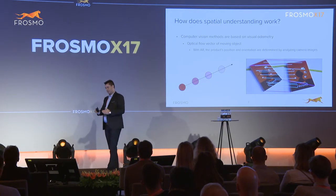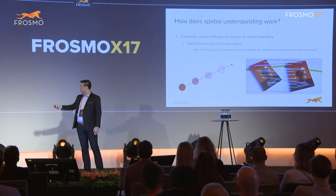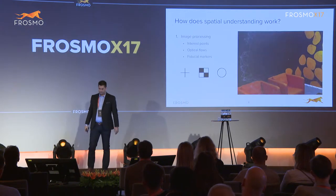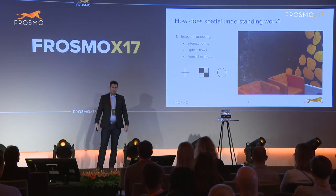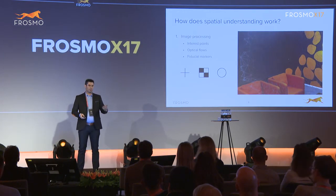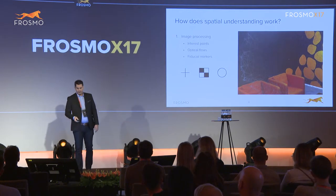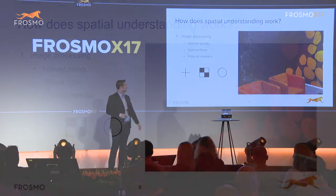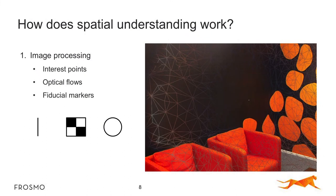On the right picture, you can see a notebook that has moved slightly, and by analyzing different points and features of it, we know it is still the same thing but from a different angle. These methods usually consist of two parts. The first one is image processing — we need to understand what we see. For this, many different methods are used. We need to find out different interest points, optical flows, and fiduciary markers. A fiduciary marker is basically just a ruler.